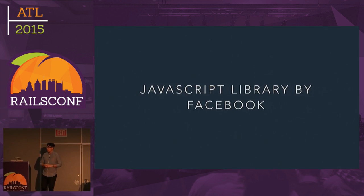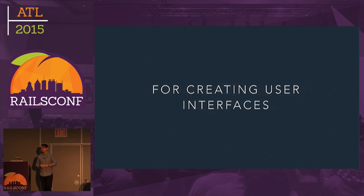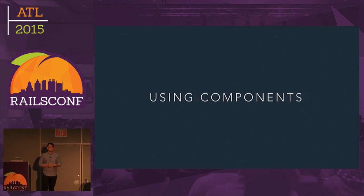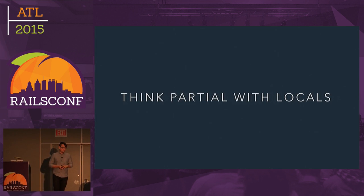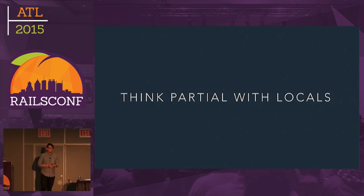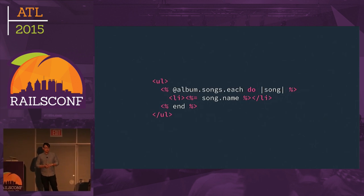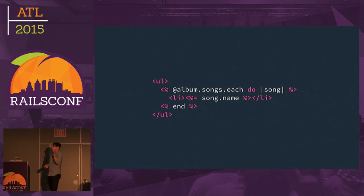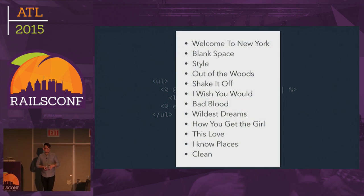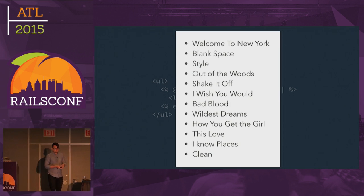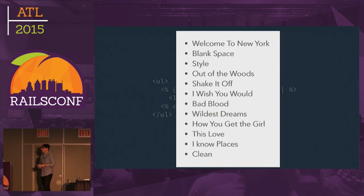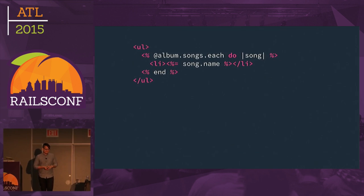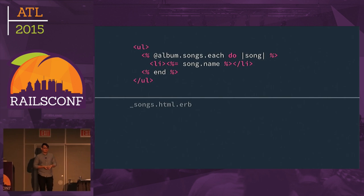React is a JavaScript library by Facebook for creating user interfaces using components. Components do three things: they render, they receive props, and they maintain state. You would do pretty well to think about a React component as a partial with locals. So let's say we have an audio service and we want to show the songs in an album. This partial should make sense to anyone who's done Rails for a day, and it renders out an unordered list of songs. This particular list is 1989 by Taylor Swift.